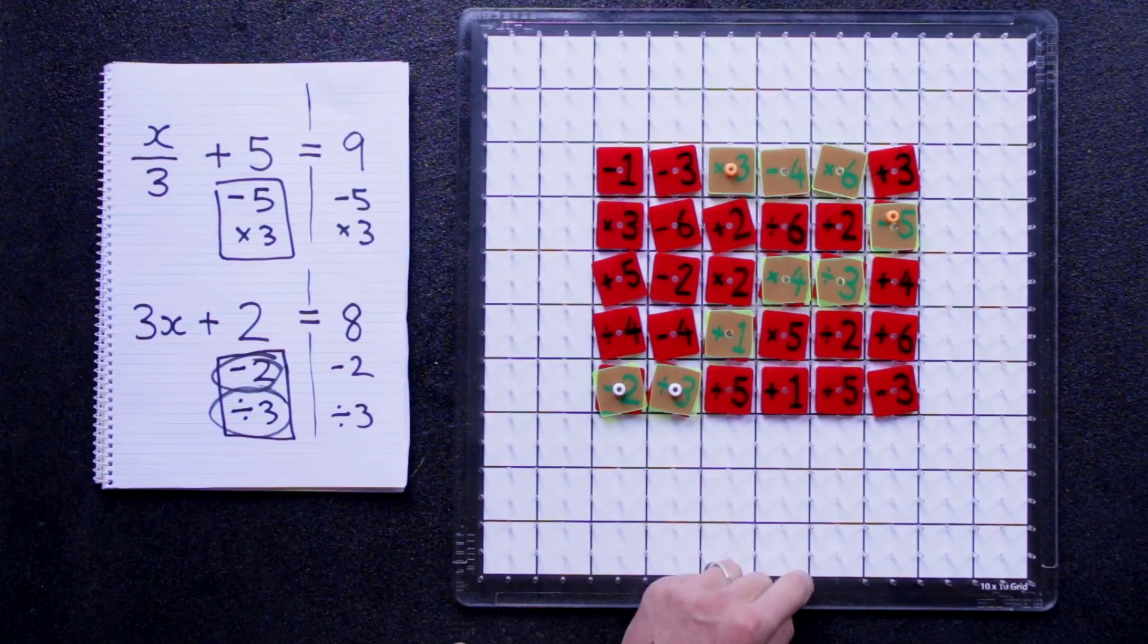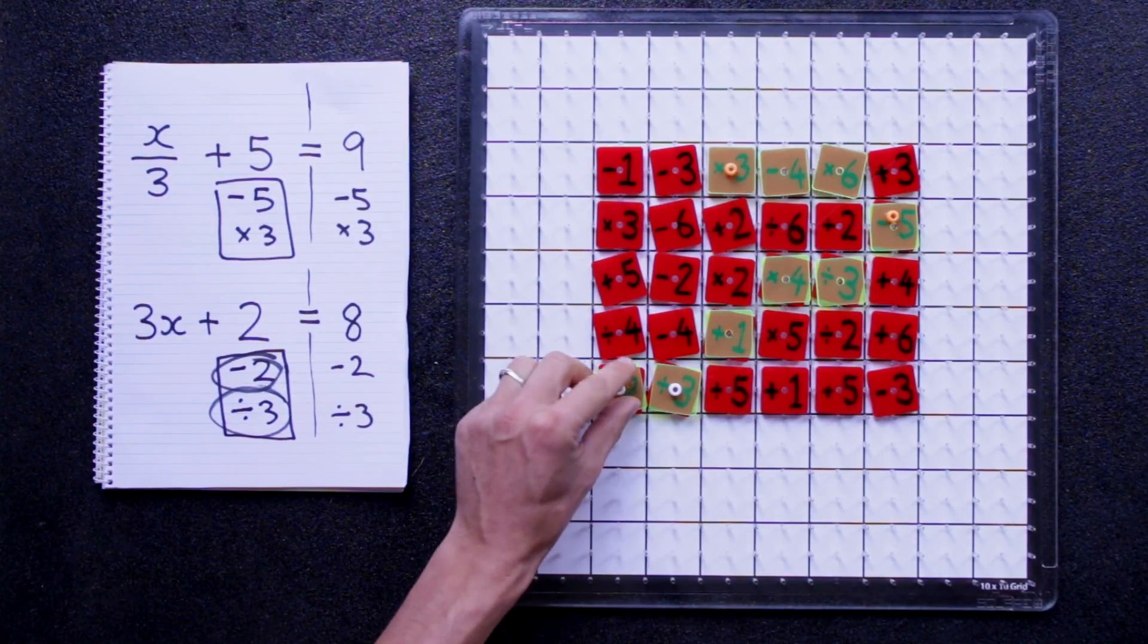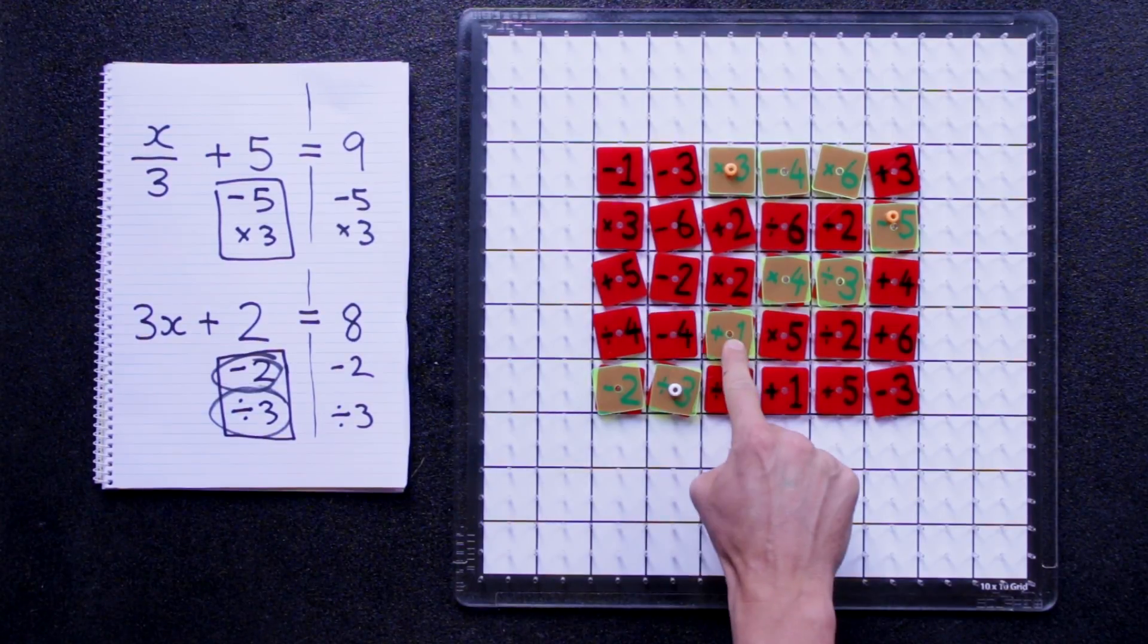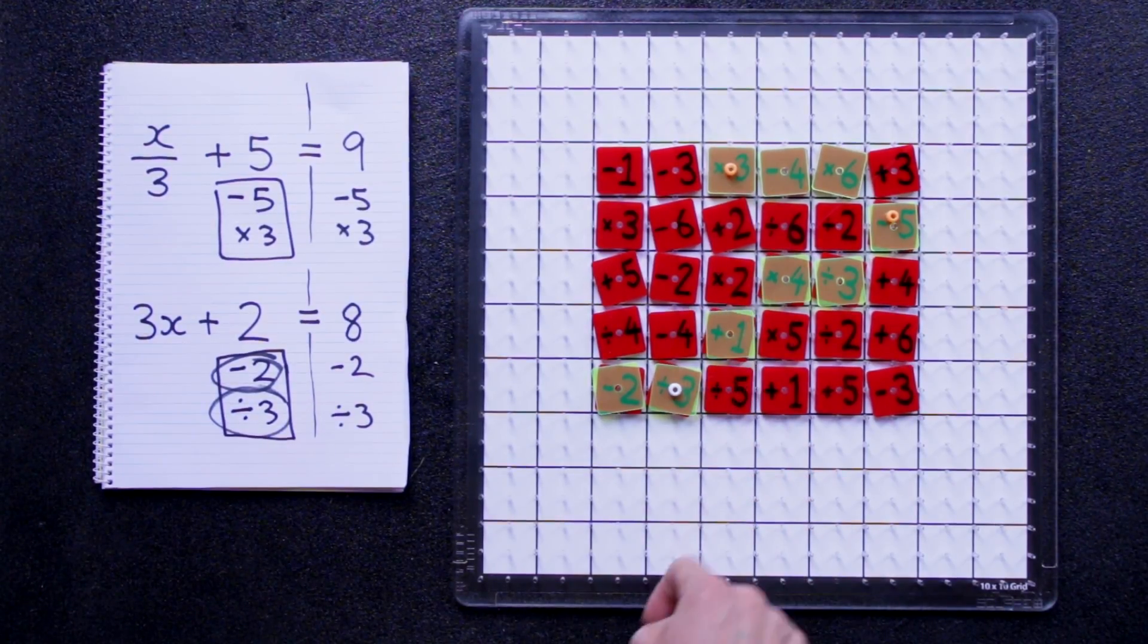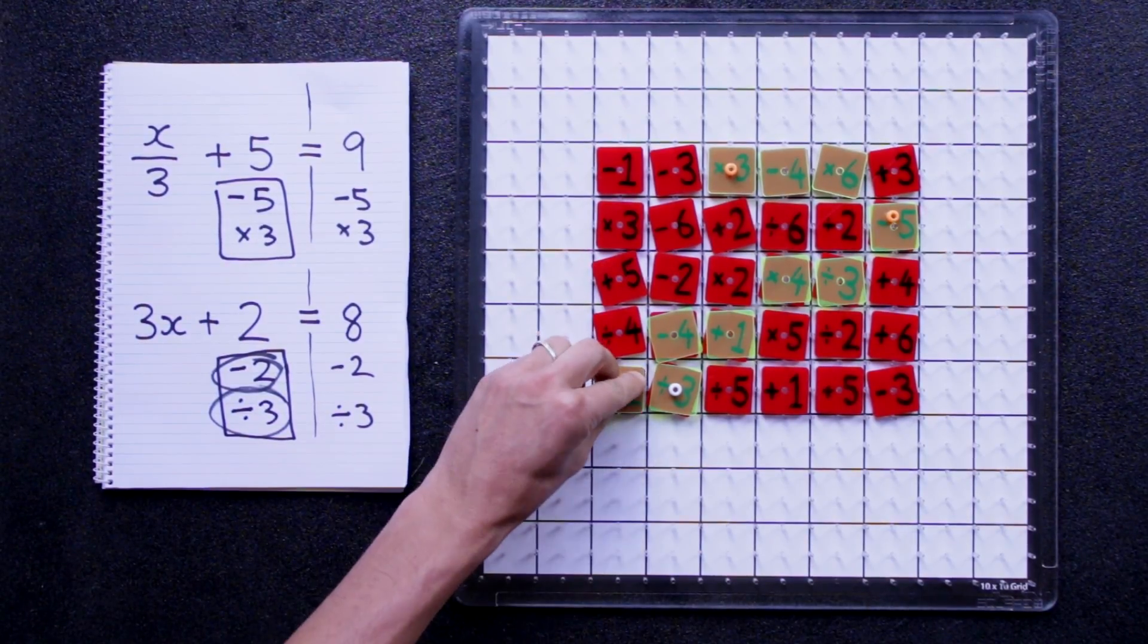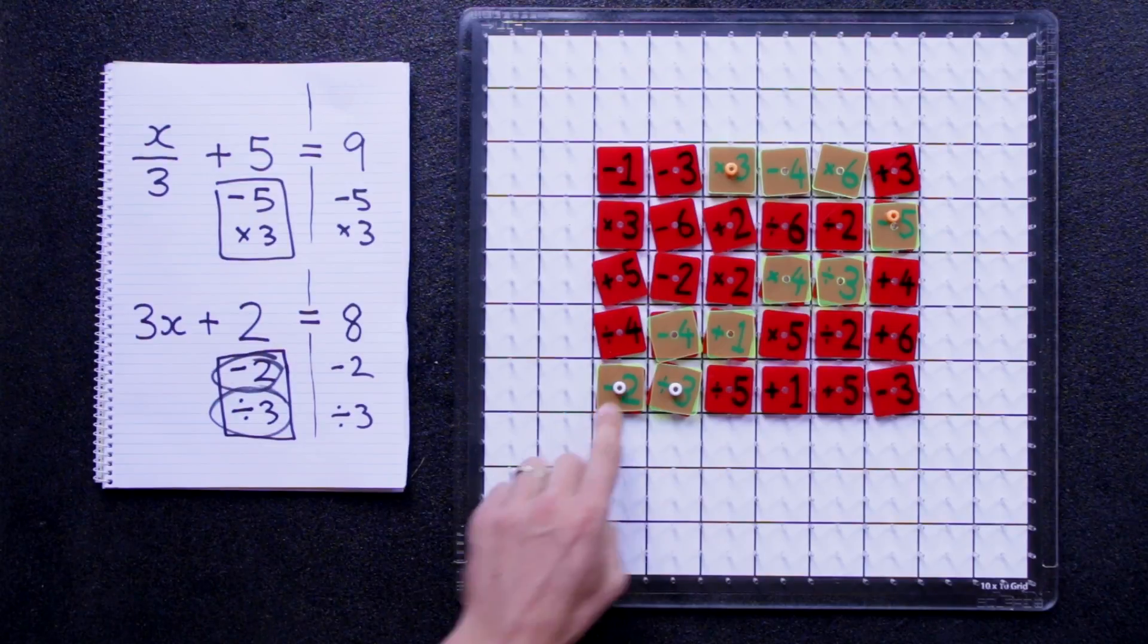So taking five could be done by maybe, see here, two and four, that would be taking six and then adding one. So we could just add that in as an action here.